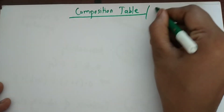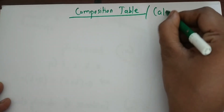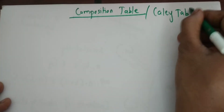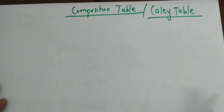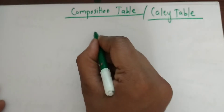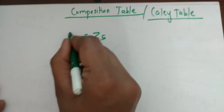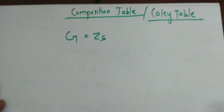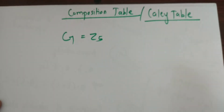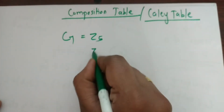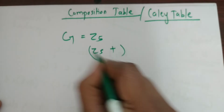Good morning everyone. Now let's see how to make a composition table. You can also call it a Cayley table. So suppose there is a group Z5. We know Z5 is a group. First, take Z5 as a group under addition and make the composition table under addition.